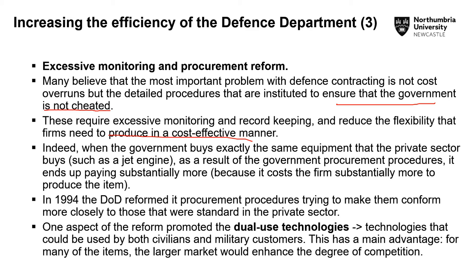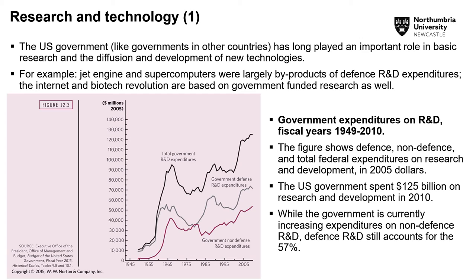One aspect of procurement reform is the focus on dual-use technologies — technologies that can be used by both civilian and military customers. The advantage is that for many of these items there is already a large existing market, so government is not the only buyer, avoiding a monopoly procurement relationship. The department of defense tries to buy technologies that already exist and are also used by non-military players. Notably, many defense R&D projects have resulted in technologies we use today, such as the jet engine and supercomputers.